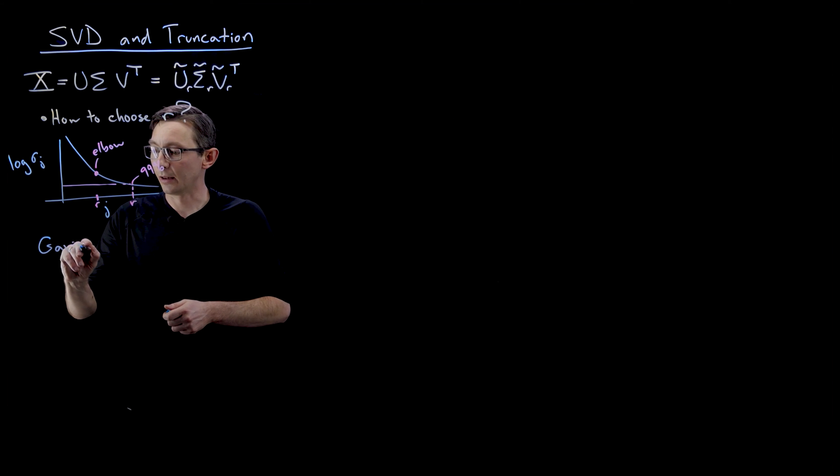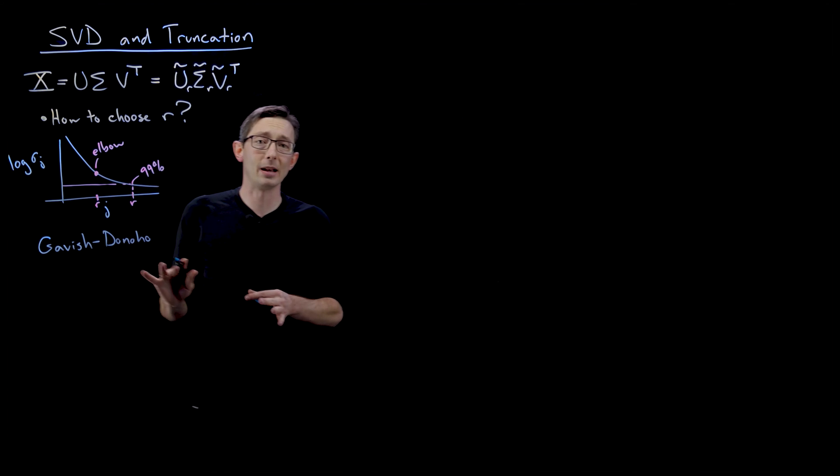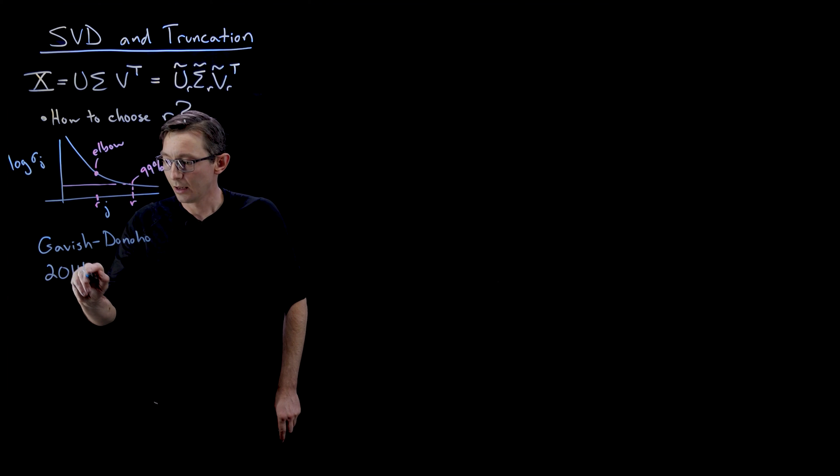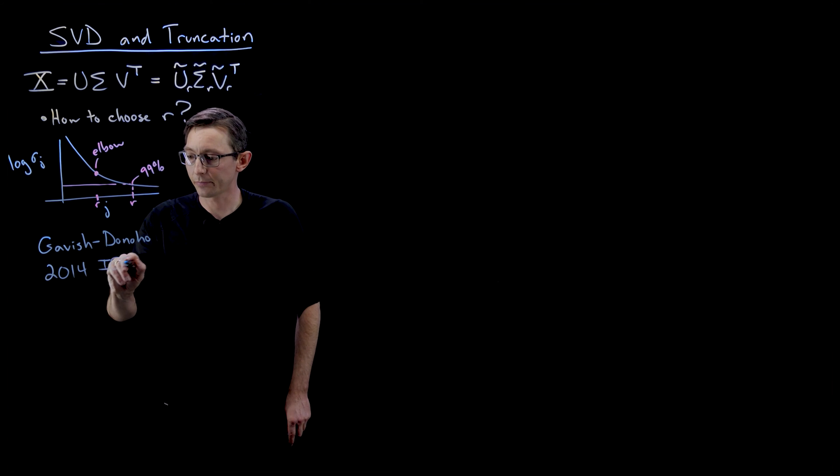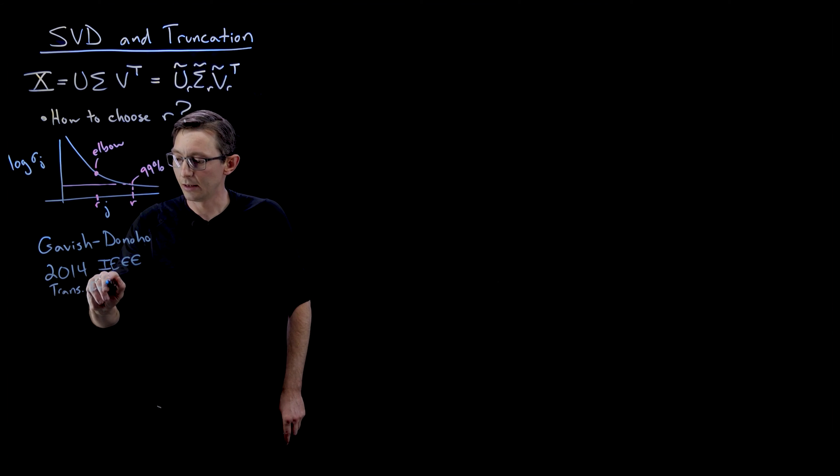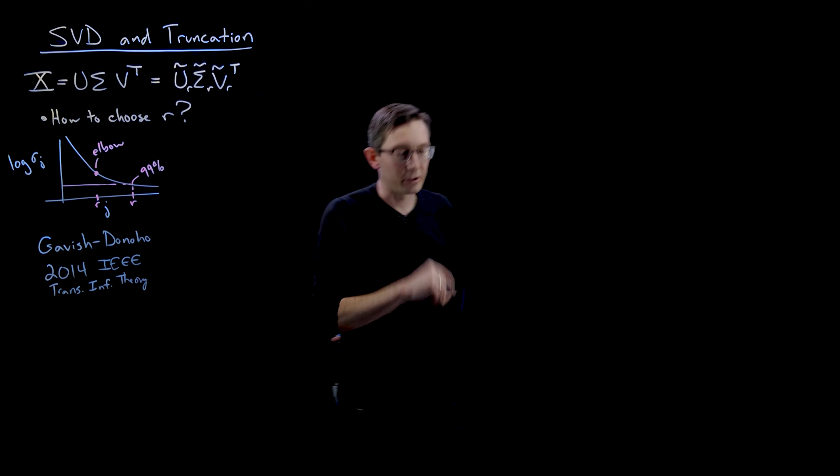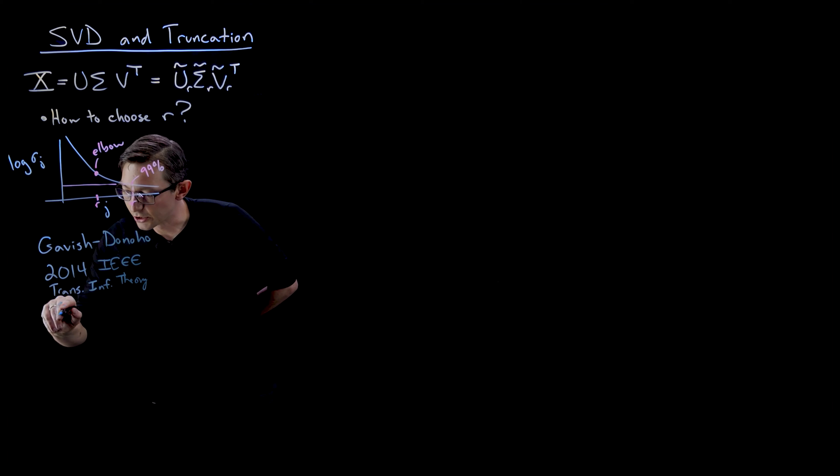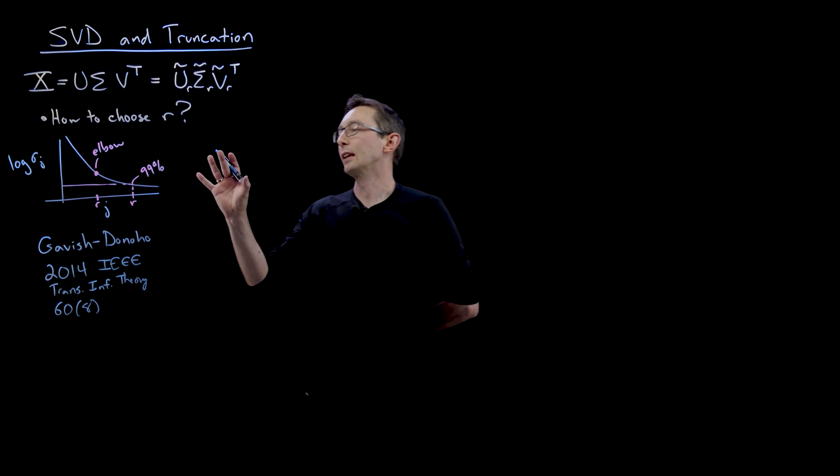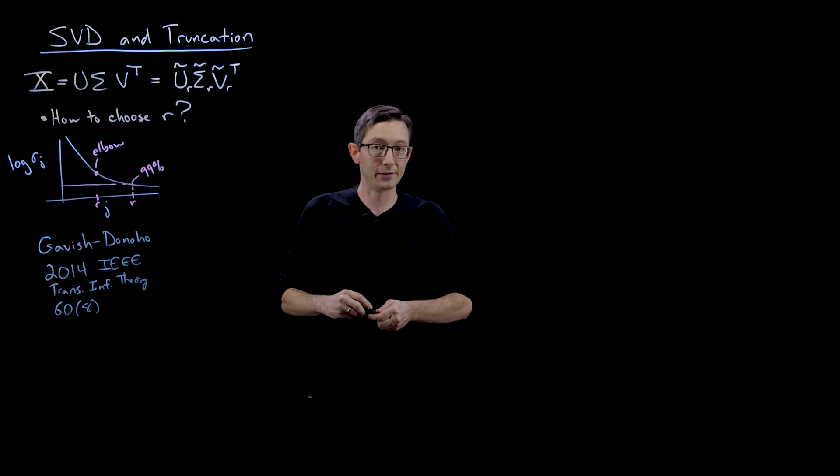So this is a paper by Gavish and Donoho. It's one of my favorite papers in the last few years. I think this is a 2014 IEEE Transactions on Information Theory. I believe it's volume 60 issue 8. So you can find this paper. It's an excellent paper and it gives conditions on how to choose the optimal rank to truncate your SVD.